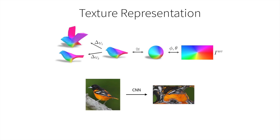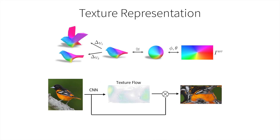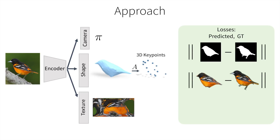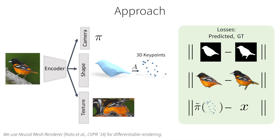We do so using a CNN, which predicts this texture image from an encoding of the input image. Instead of directly predicting the pixel values of this texture image, we instead predict a texture flow — please see the paper for more details. Given the predictions, we can formulate our objectives, which enforce that the predictions match the image evidence. We minimize the distance between the rendered mask, the rendered image, and the projected keypoints with the respective ground truth. We use Neural Mesh Renderer, so all of our losses are differentiable. We also incorporate several priors, such as symmetry and surface smoothness.